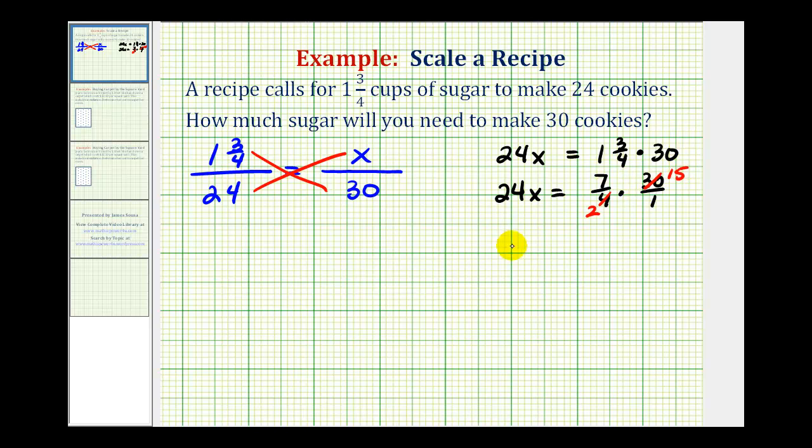So now we have the equation twenty-four x equals, the denominator is two times one that's two, the numerator is seven times fifteen that's one hundred five.